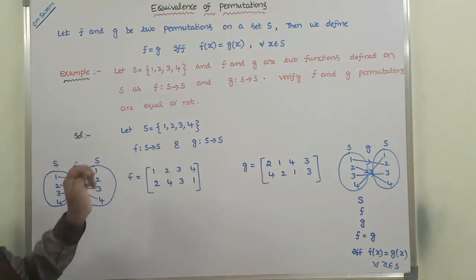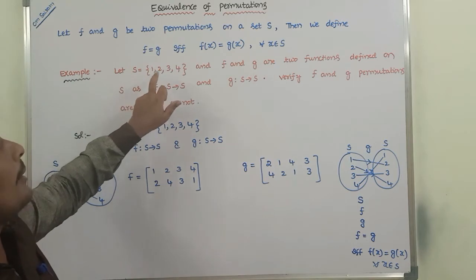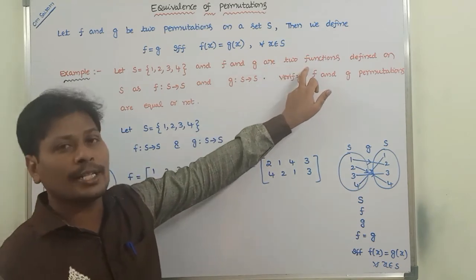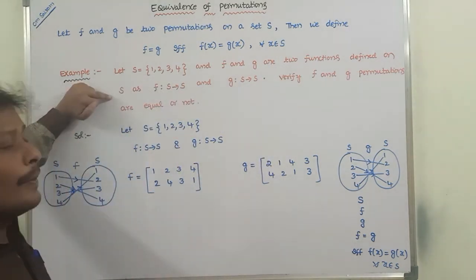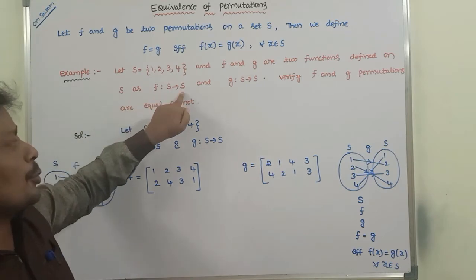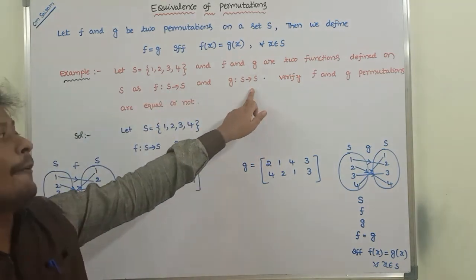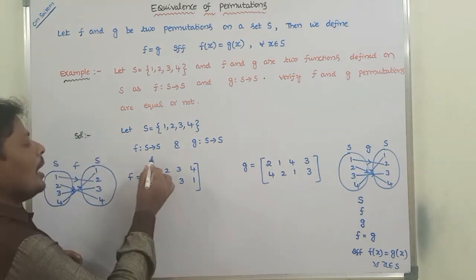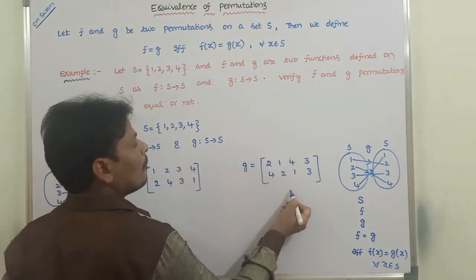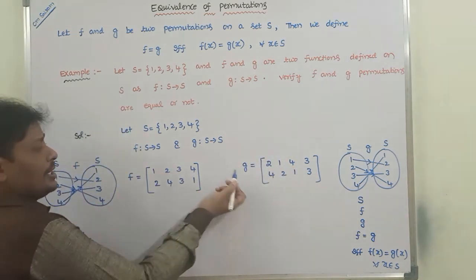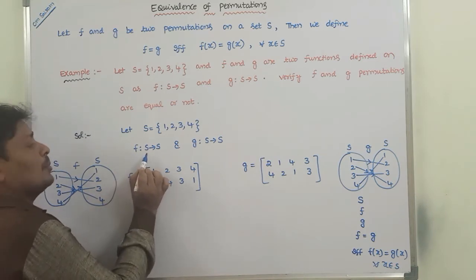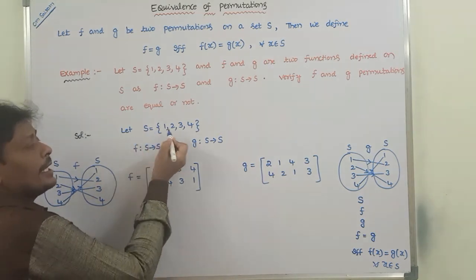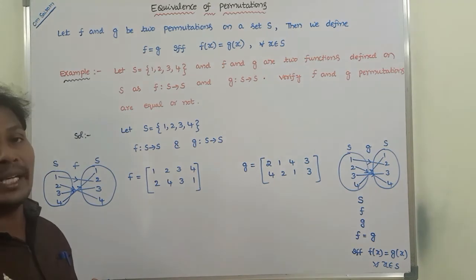Now consider this example. Let S equal the set {1, 2, 3, 4}, and let F and G be two functions defined on S, where F maps from S to S and G maps from S to S. We need to verify whether permutations F and G are equal or not.